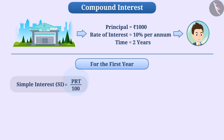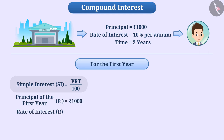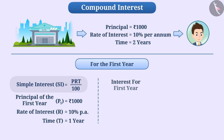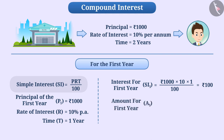SI is equal to PRT divided by 100. Here the principal of the first year P1 is rupees 1000, the rate of interest R is 10%, and time T is one year. Interest for the first year SI1 is equal to 1000 × 10 × 1 ÷ 100, which equals rupees 100. At the end of the first year, the amount A1 equals P1 plus SI1, that is rupees 1000 plus rupees 100, equals rupees 1100.